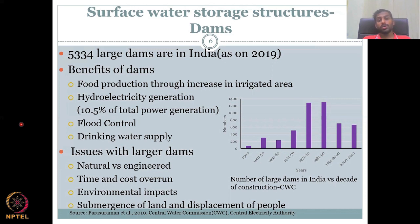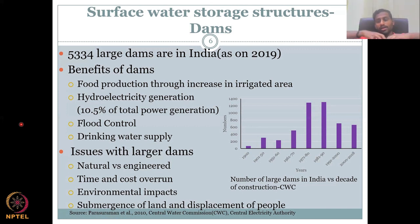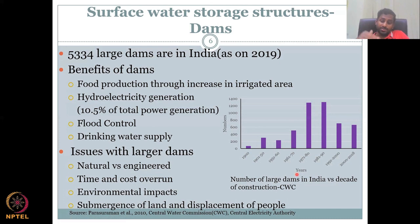Large dams also increase food production by providing an irrigated command area — water is released into the land for agriculture. Large dams are not only for irrigation but also for hydroelectric power generation, which accounts for almost 10.5 to 11 percent of India's total power generation.